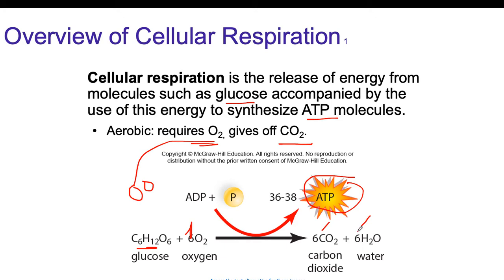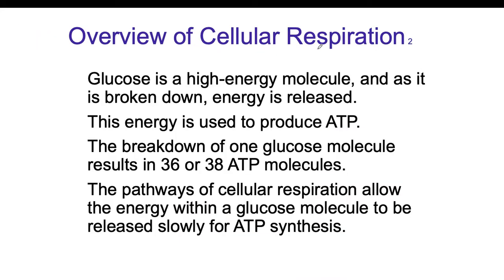So deep inside our bodies, within our cells and the mitochondria, our bodies take oxygen plus sugar and create ATP, with byproducts being CO2 and water. That CO2 is what we breathe off, and we also breathe off water — think about how your breath is kind of moist. Water is also released from your body as sweat or urine. So every time we breathe in oxygen, it goes to our cells, joins with sugar in the mitochondria, and forms ATP, carbon dioxide, and water.